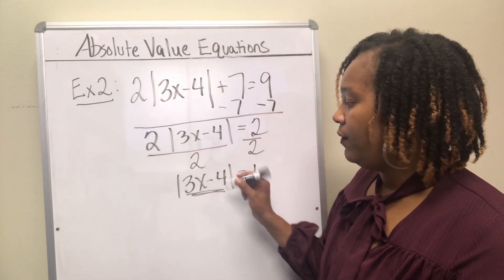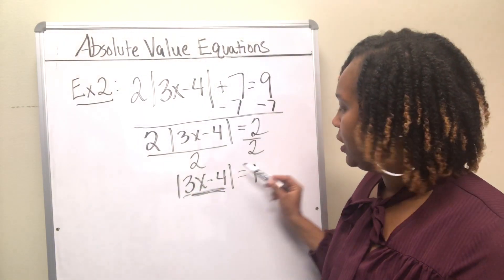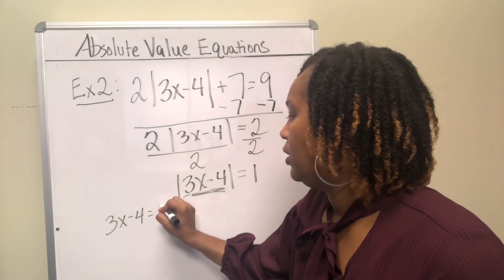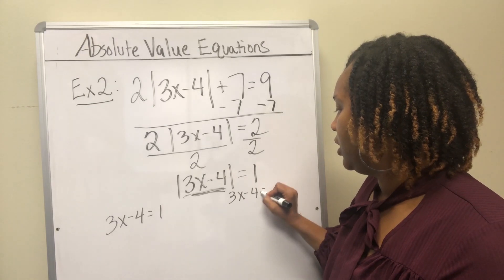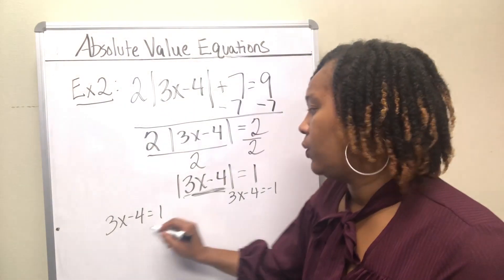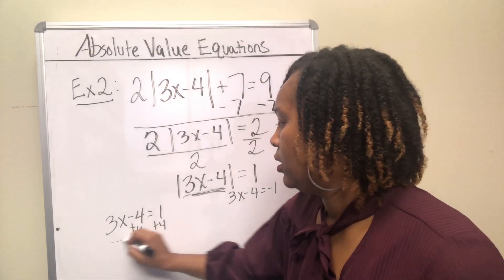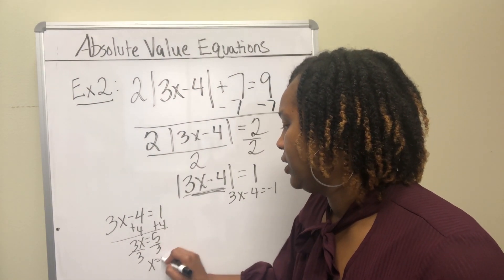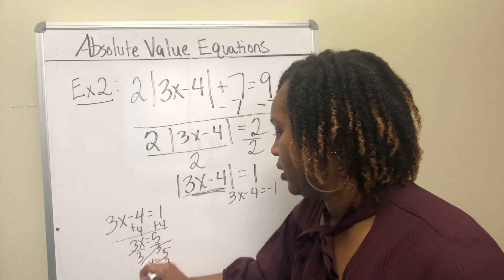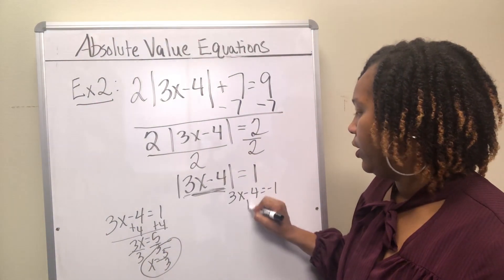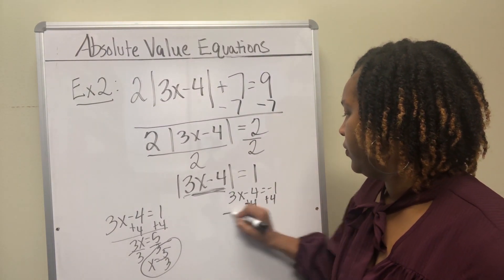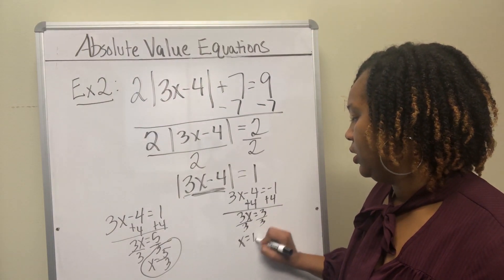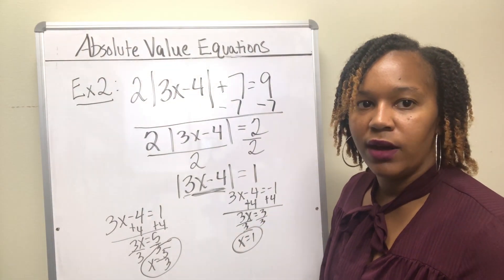Now that the absolute value is isolated, take 3x minus 4 and set it equal to positive 1, and also set it equal to negative 1. For the first equation, add 4 to both sides to get 3x equals 5, then divide by 3 to get x equals 5 thirds. For the second equation, add 4 to both sides to get 3x equals 3, then divide by 3 to get x equals 1. So the two solutions are 5 thirds and 1.